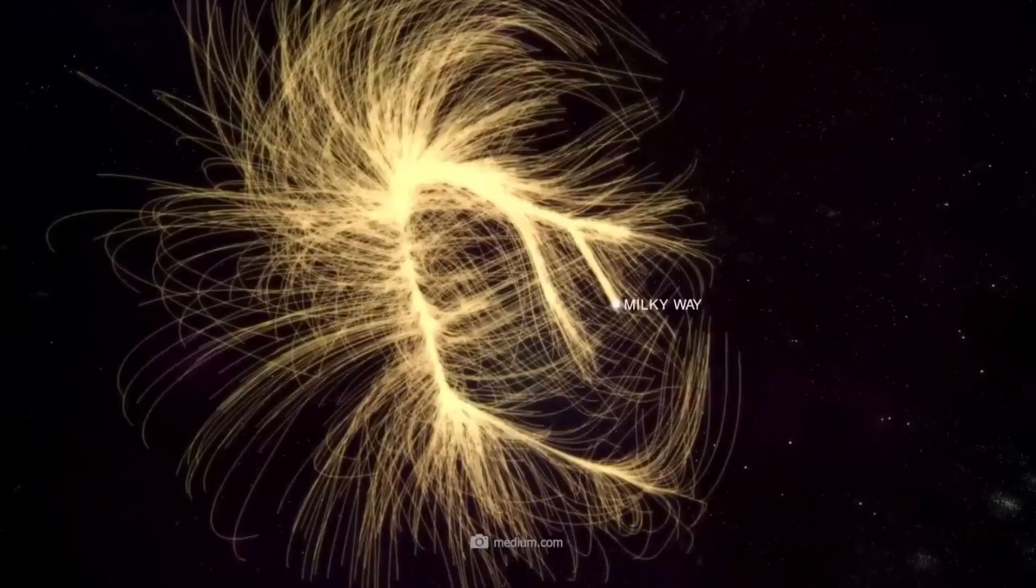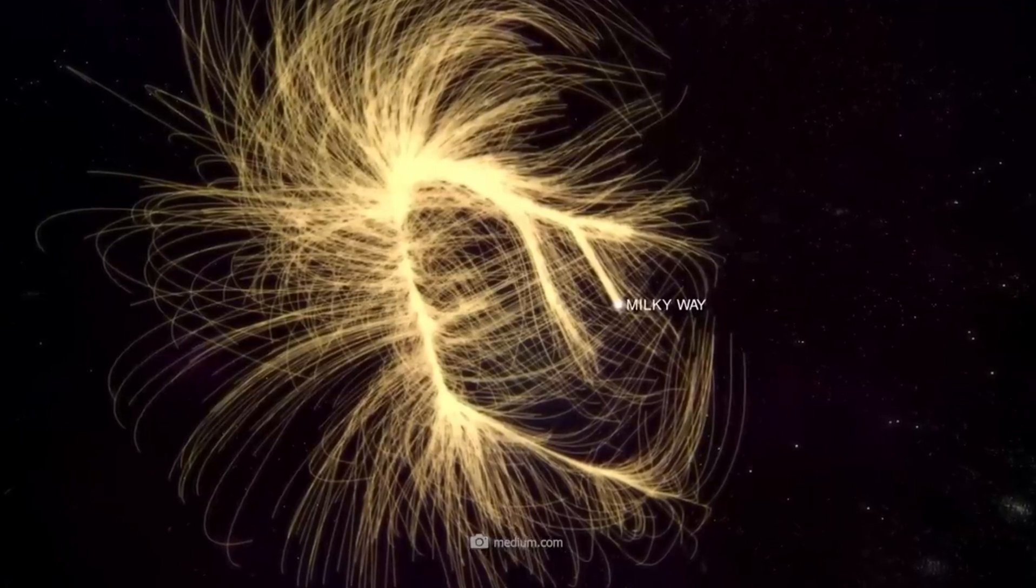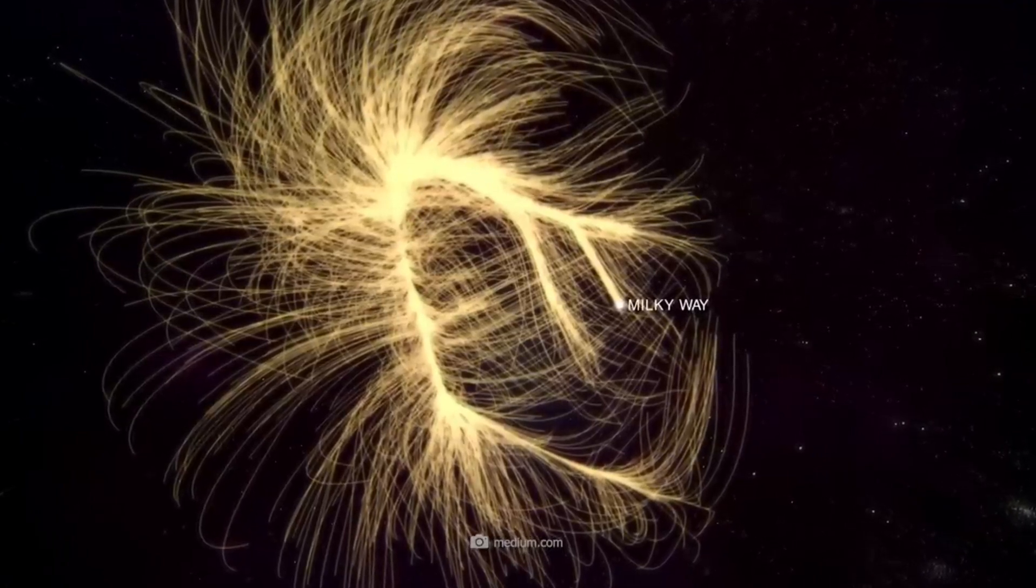God can only be big, huge, and infinite. Brian Cox says in the visible part of the universe, there are something like 2 trillion galaxies.